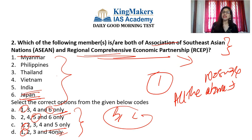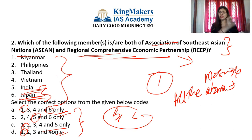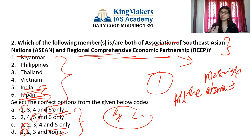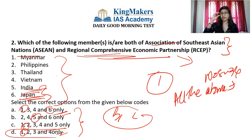The main objective of RCEP is to boost goods trade by eliminating tariff and non-tariff barriers. By removing those barriers, goods trade will be boosted. RCEP is expected to provide consumers a greater choice of quality products at affordable prices — that is the main aim. RCEP negotiations were formally launched way back in 2012 at the ASEAN Summit held in Cambodia.